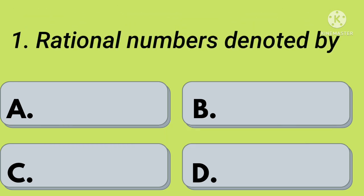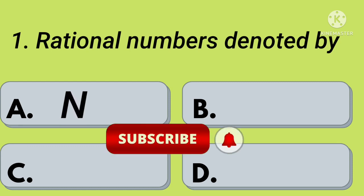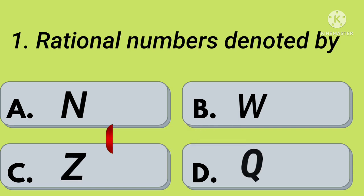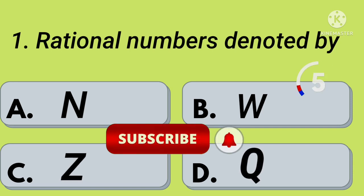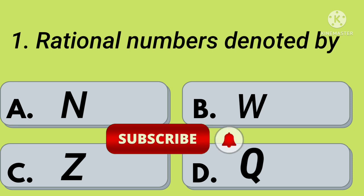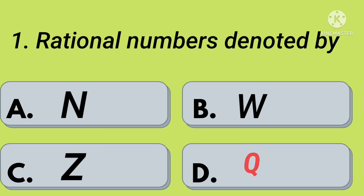First question: rational numbers are denoted by — option A: N, option B: W, option C: Z, option D: Q. Your time starts now. Right, option D: Q.